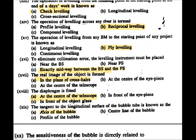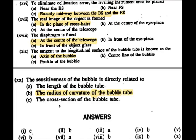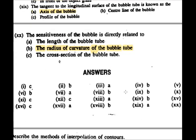The axis of the bubble tube is tangent to the longitudinal surface of the bubble tube. The sensitivity of the bubble is directly related to the radius of curvature of the bubble tube.